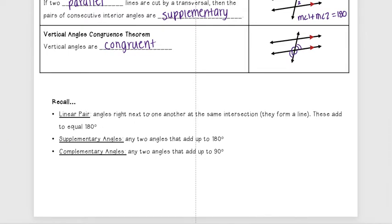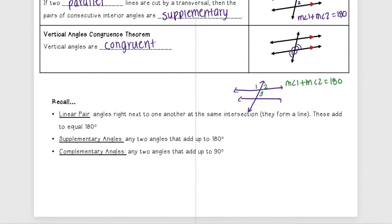Some other things we're going to be using for this section is linear pair, which we learned about in chapter one. Those are angles right next to one another at the same intersection — they form a line and add up to 180. For example, a linear pair would be two angles at the same intersection right next to each other, so the measure of angle one plus the measure of angle two equals 180. Angles two and three could also be a linear pair — they form a line and add to 180.